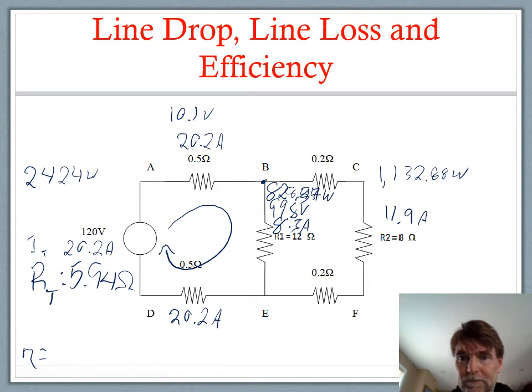R1 has a power output of 828.34 watts. Add to that the power output of R2, which is 1132.88 watts. Divide that by the total power of the circuit, which is 2424 watts.